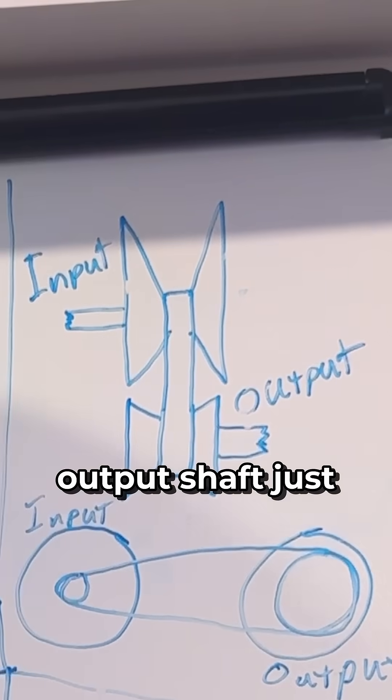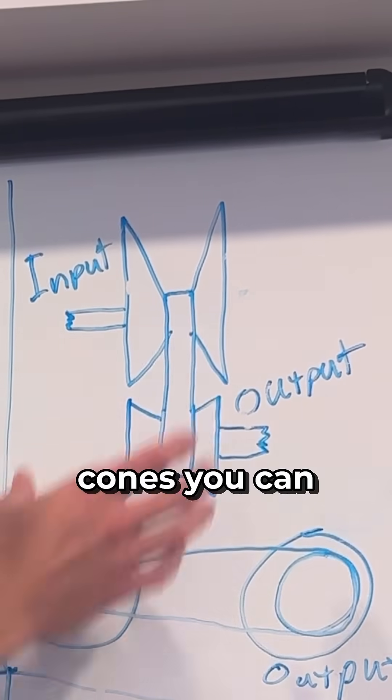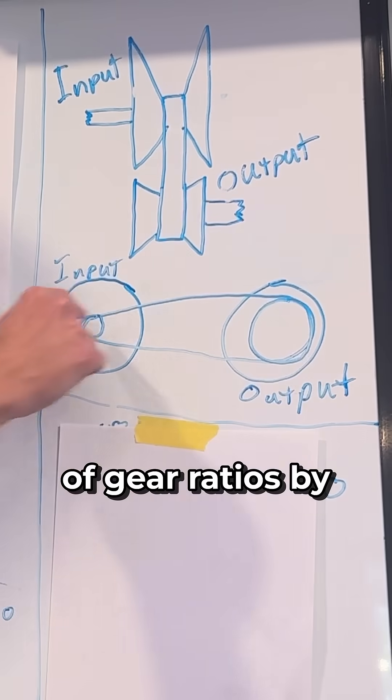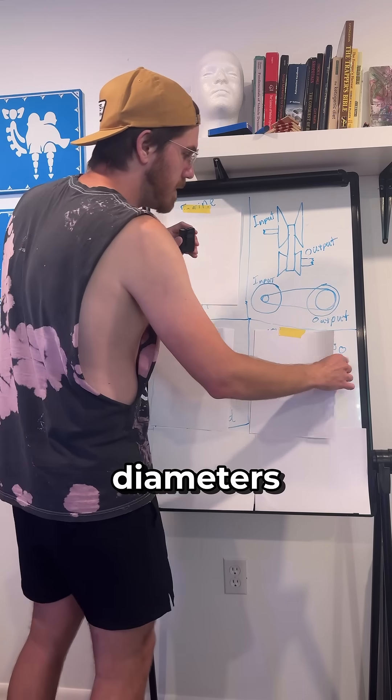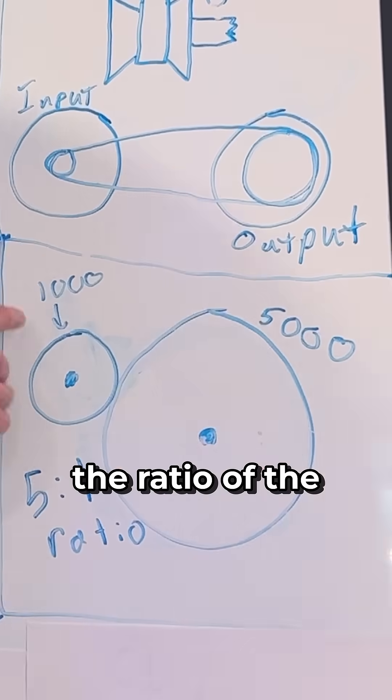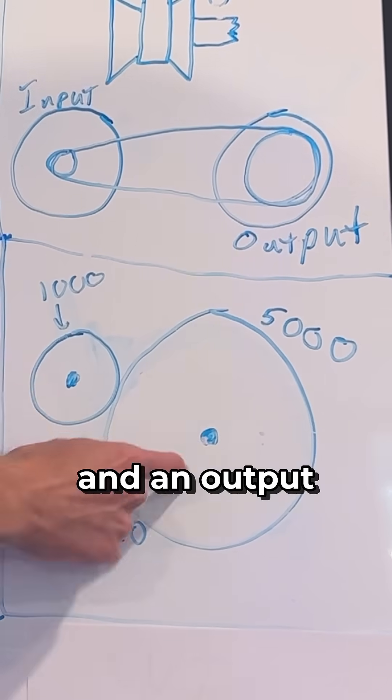You have an input shaft and an output shaft just like any other transmission, and through this belt and these cones you can have a continuously variable set of gear ratios by changing those diameters. As we know, gear ratios is the ratio of the teeth and or diameter that you have of an input and an output.